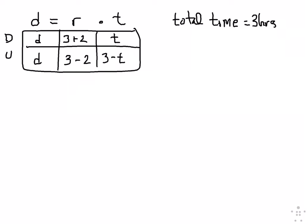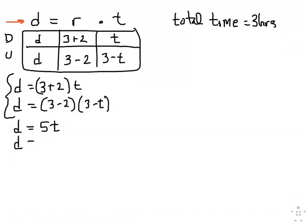So now we have our two equations. The first row is D equals three plus two times T. And the second equation is D equals three minus two times three minus T. Now we can simplify. The first one becomes D equals five T. The second one becomes D equals one times three minus T, so it just becomes three minus T.